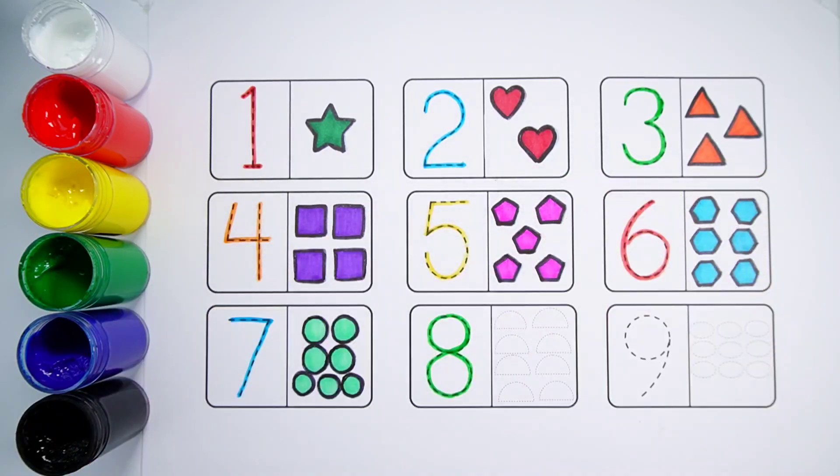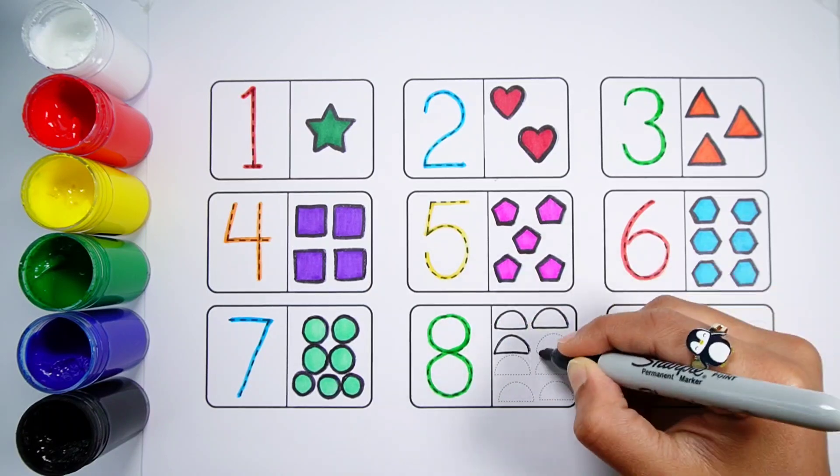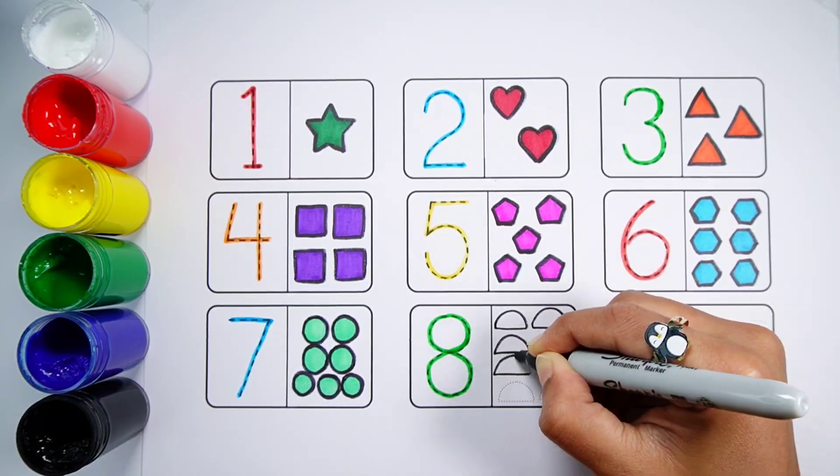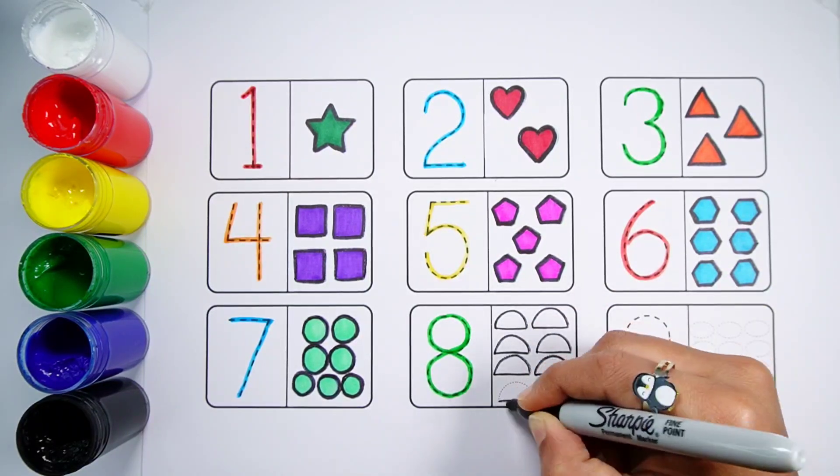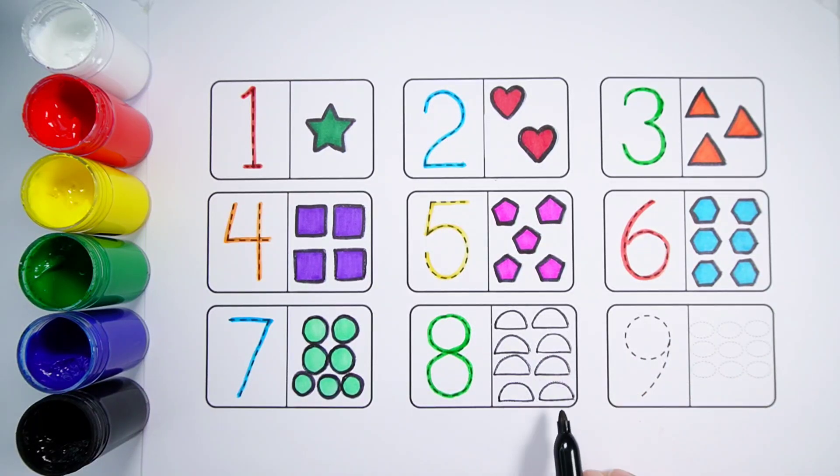Number 8. One, two, three, four, five, six, seven, eight. Eight semi-circles.